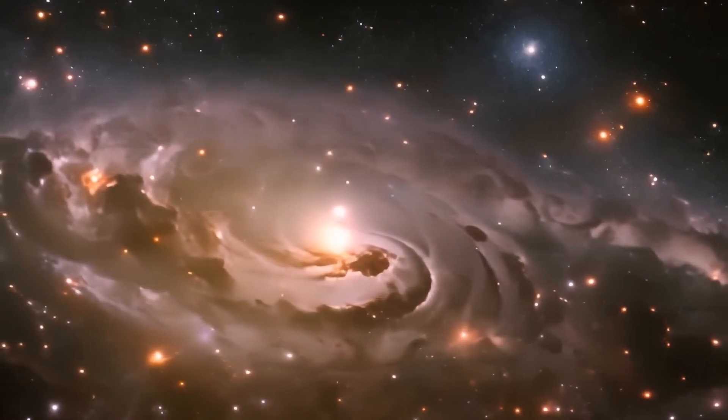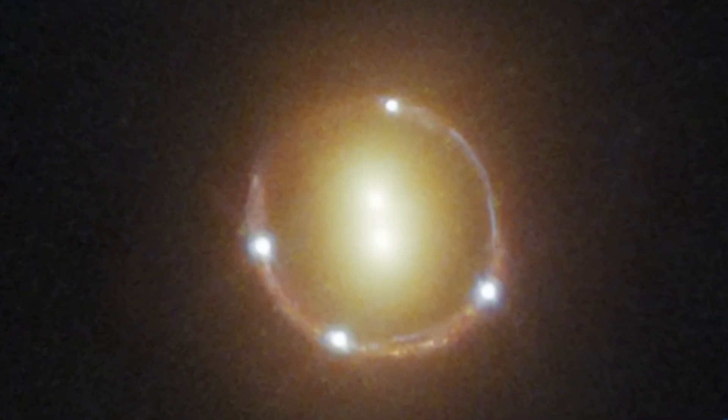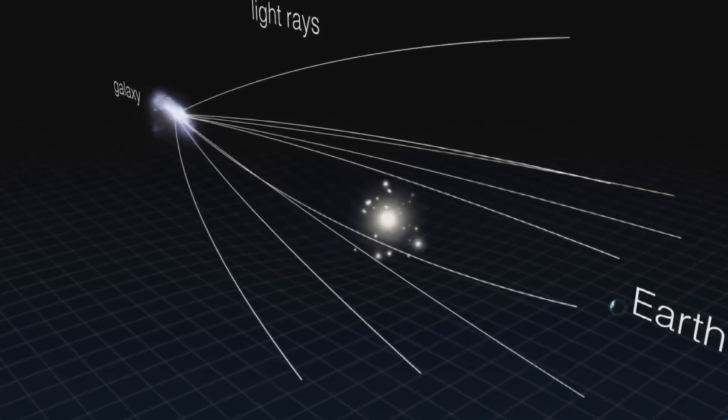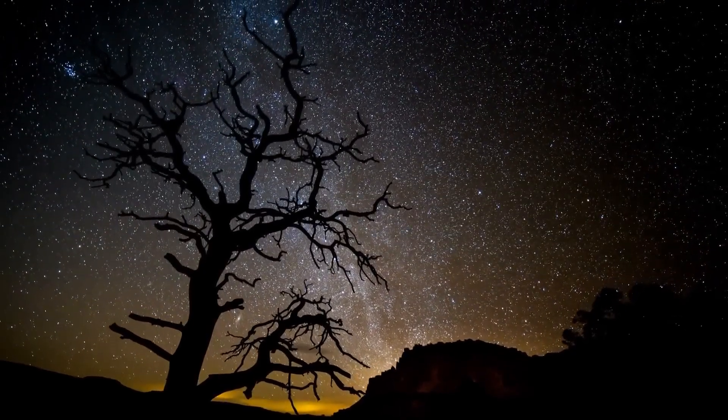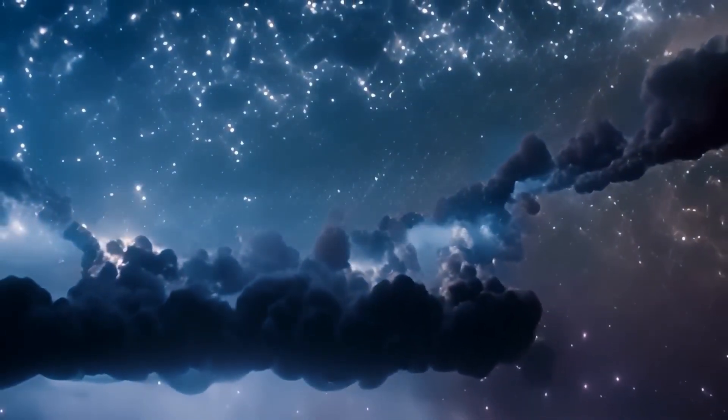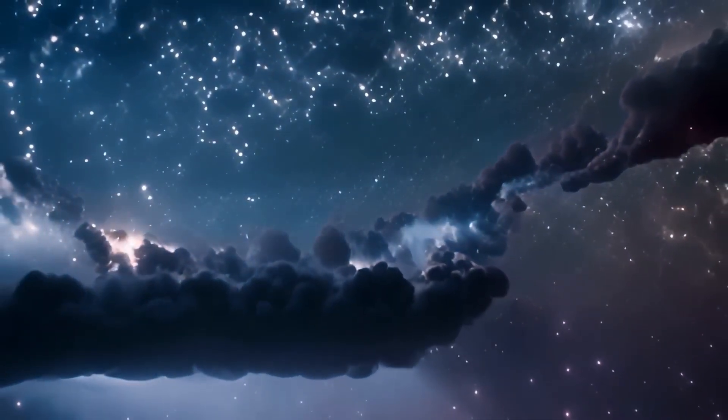A fossil galaxy is a galaxy that consists mainly of older stars and has not formed any new stars for billions of years. In astronomy, fossil galaxies are considered to be remnants from the early days of the universe, and they provide our scientists with fascinating insight into the developmental history of galaxies and into the developments in the early universe.